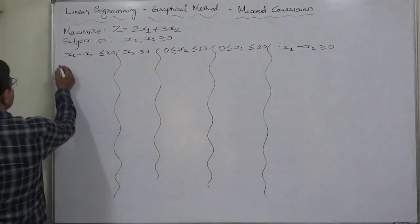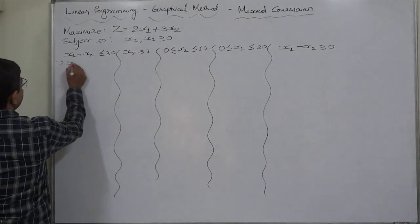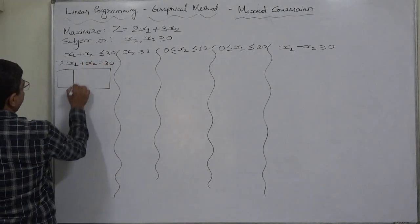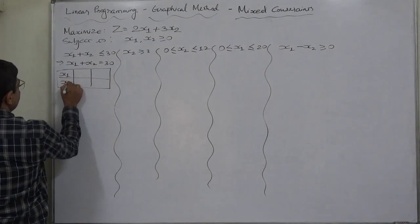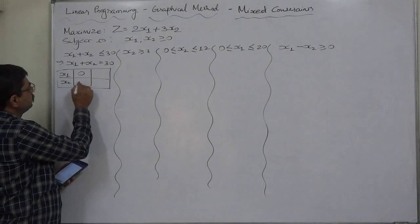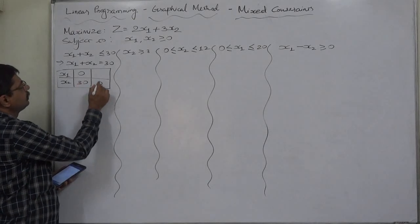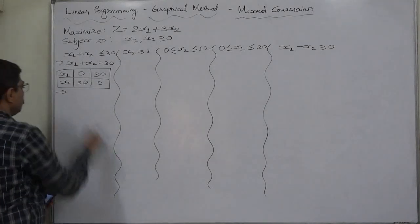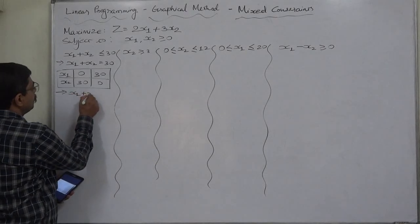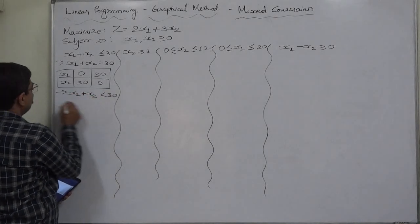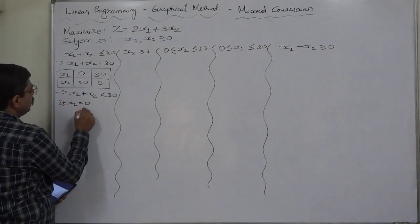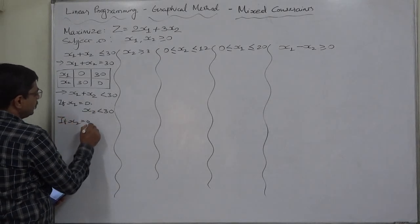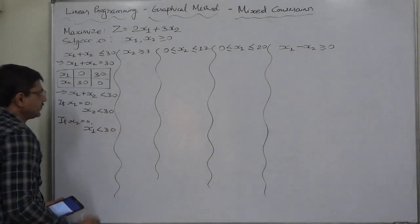First, segregation into equation and inequality. x1 plus x2 equals 30 — we can find two points to draw the straight line. If x1 equals 0, then x2 is 30; if x2 equals 0, then x1 is 30. The inequality part is x1 plus x2 less than 30, so towards 0.